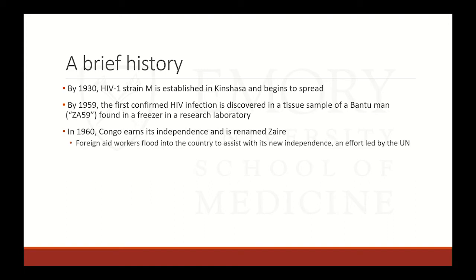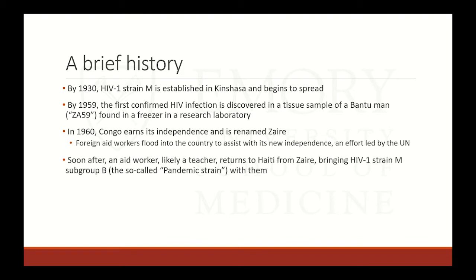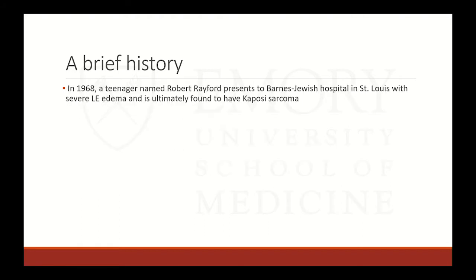In 1960, Congo earned its independence and was renamed Zaire. Foreign aid workers flooded into the country, led by the UN. An aid worker — likely a teacher — returned to Haiti from Zaire, bringing HIV-1 strain M subgroup B, the so-called pandemic strain and the main strain of HIV found outside of Africa to this day. By the mid to late 1960s, HIV-1 had entered the United States.